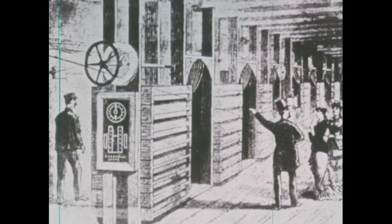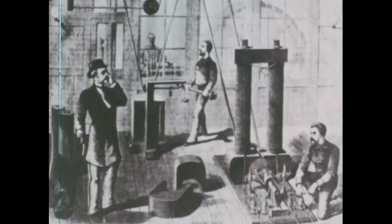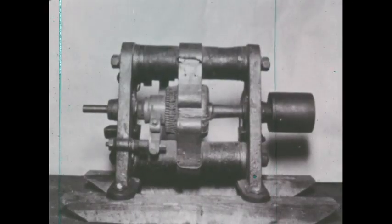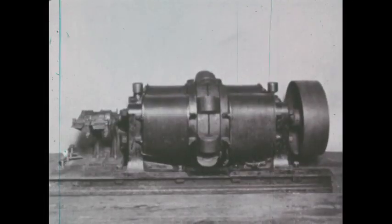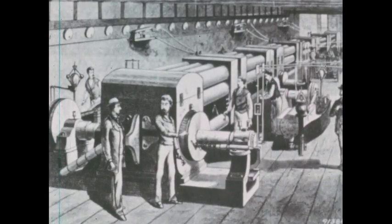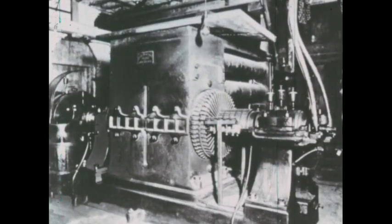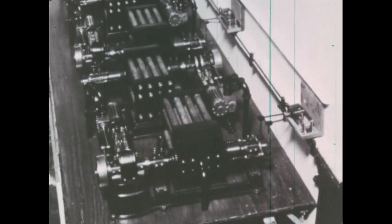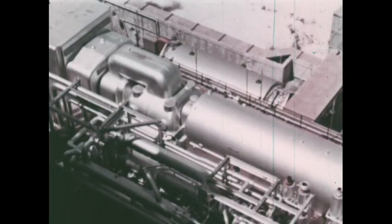More efficient machines were soon built. Stronger electromagnets were substituted for the permanent magnet. A coil was used instead of Faraday's copper disc. Today's huge complex generators operate on the same principle.